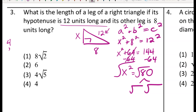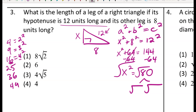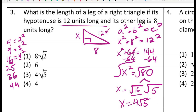Perfect squares are numbers like 4, 9, 16, 25, 36, and so on. I want the biggest perfect square that divides evenly into 80 — that's 16, since 80 equals 16 times 5. Radical 16 simplifies to 4, and radical 5 stays as radical 5. So in simplest radical form, the length of the leg is 4 radical 5.